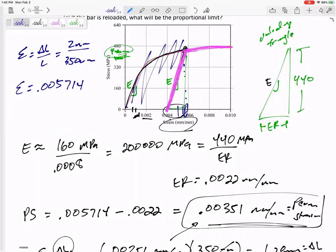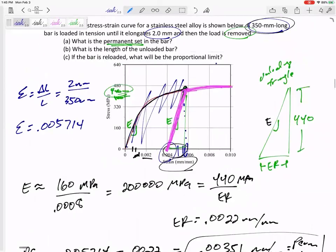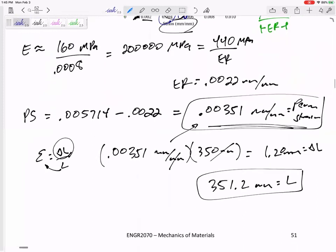It starts with that strain right there, but that means that the new proportional limit or the new sigma PL or sigma Y, is now 440 as opposed to down here at 300. So now the new proportional limit would be 440 MPa.